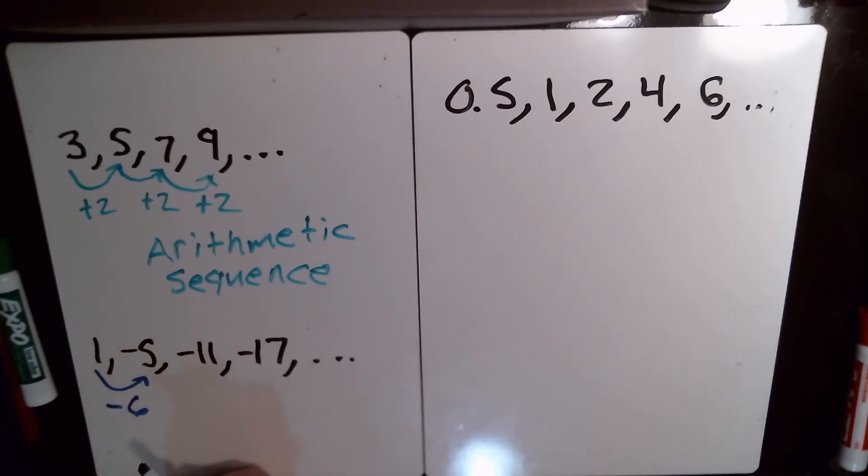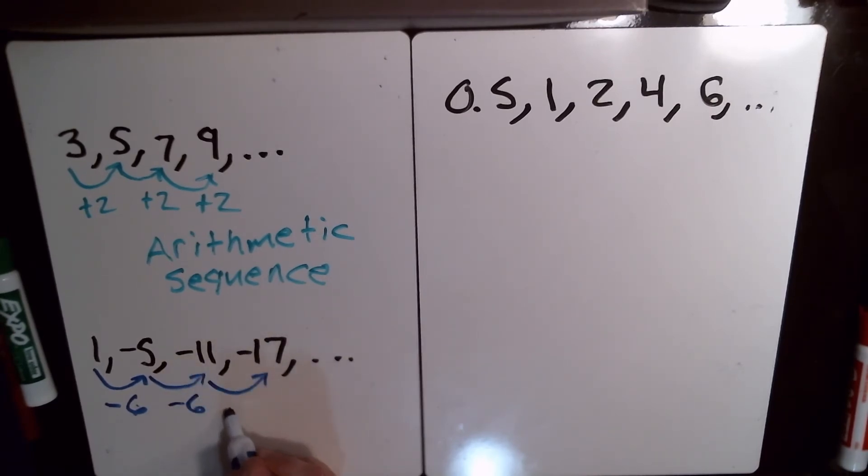Right, 1 plus negative 6 will be negative 5. Now from negative 5 to negative 11, we also minus 6. So again, what type of sequence is this? This is arithmetic.